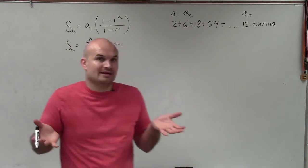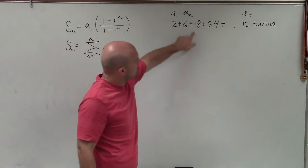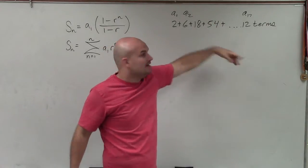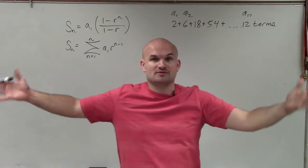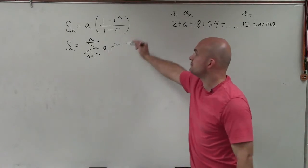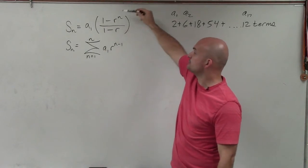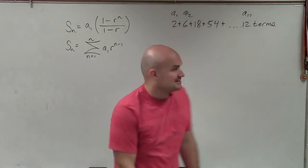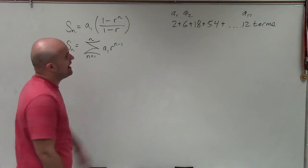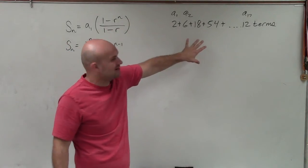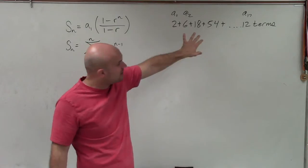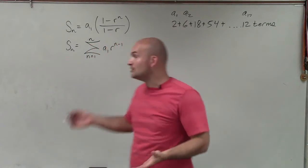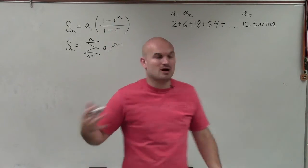To find the sum, we can do this two different ways. We can simply add 2 plus 6 plus 18 plus 54, determine the ratio, figure out the next number, and keep going until we've added 12 terms. We also have the formula: a sub 1 times (1 minus r raised to the number of terms) divided by (1 minus r). Even though this might seem simple on a calculator, what if you had 122 terms? So let's get used to working with the formula.